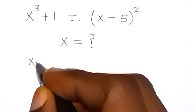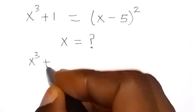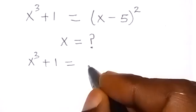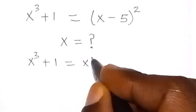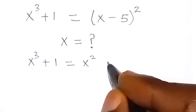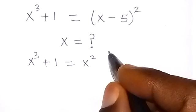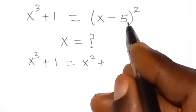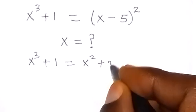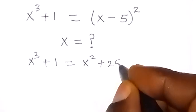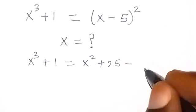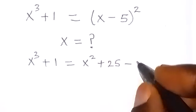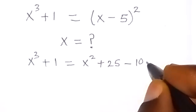We have x cube plus 1 equals the expansion of this one, which will give us x squared, then plus 5 squared, that's 25, then minus 2 times x times 5, that's minus 10x.